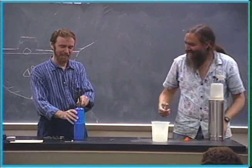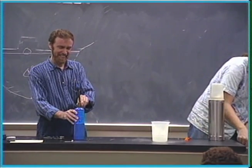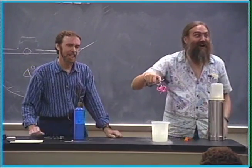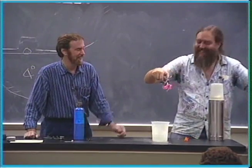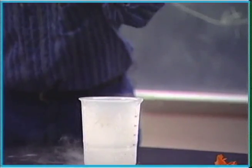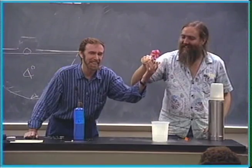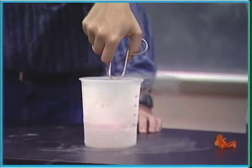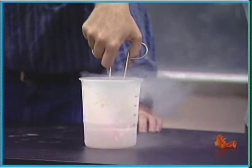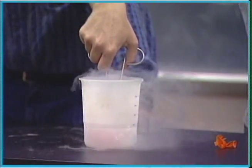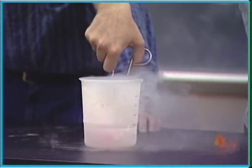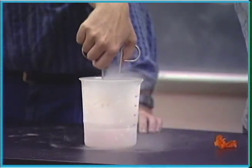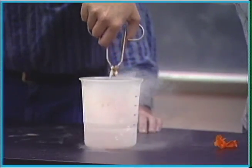Let's try the flower. This is a flower Ted found out on the ground — it's kind of nice and limp, right? What happens if we slow those molecules down? Why did it fizzle like that? What's going on?